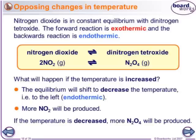Looking at this example: nitrogen dioxide is in constant equilibrium with dinitrogen tetroxide. You don't even need to know this exact equation, but it's a very common one. The forward reaction is exothermic and the backwards reaction is endothermic. Here's the equation for the reaction. If you increase the temperature — remember, the forward reaction is exothermic and the backwards reaction is endothermic — you've increased the temperature, meaning you've put thermal energy in.